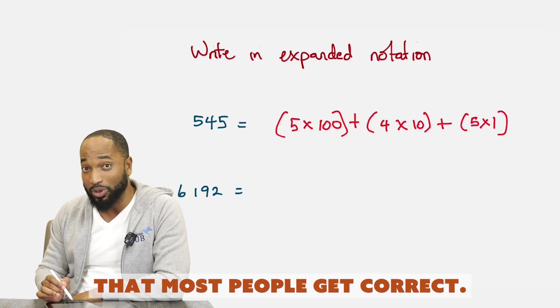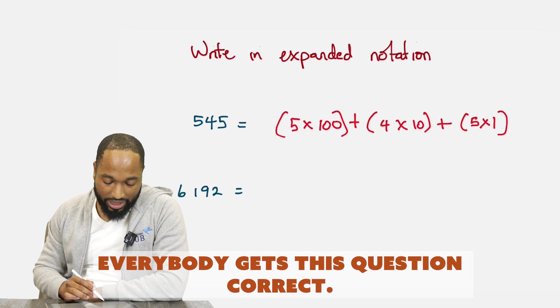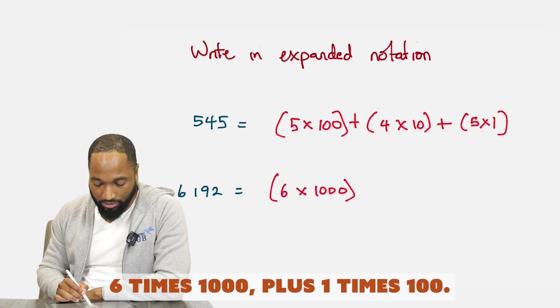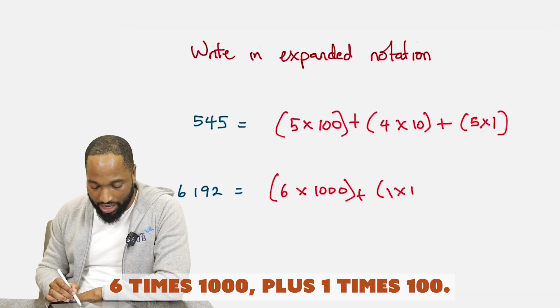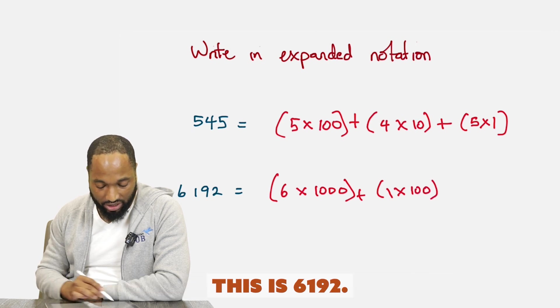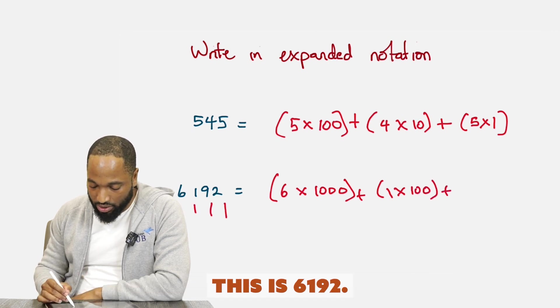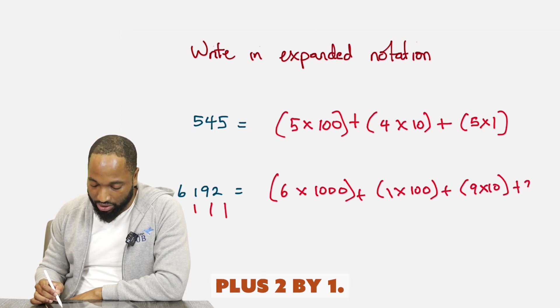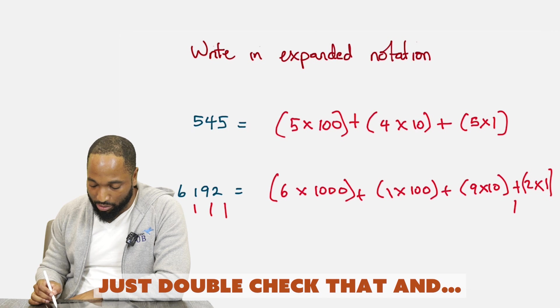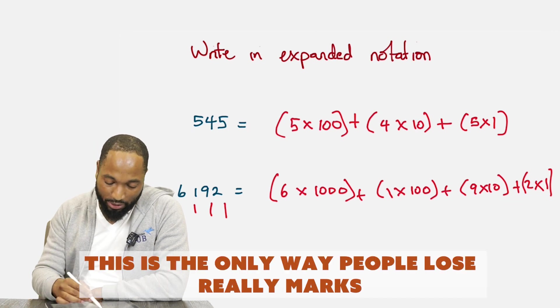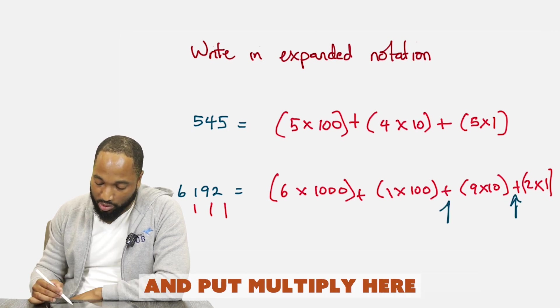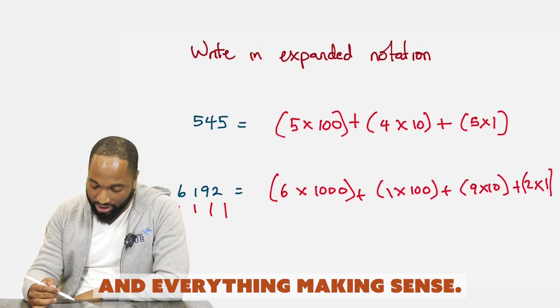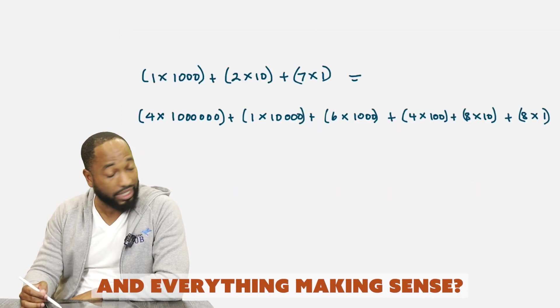This is one of the questions that most people get correct. Everybody gets this question correct. Six times one thousand plus one times one hundred. This is six thousand one hundred and ninety two. So the nine is nine ten. So you'll put nine by ten plus two by one. Just double check that. This is the only way people really lose marks on this. Like they make a mistake and put multiply here when they should add. So just double check everything making sense.